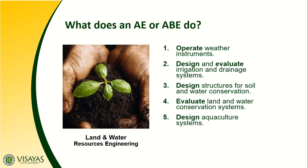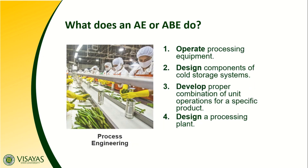All of these fundamentals for these specializations you will learn in the later part of our videos — this is just an introduction, just an overview of what agricultural and biosystems engineering is and what the fields of specialization are. For Process Engineering, the roles include: operate processing equipment; design components of cold storage systems; develop a proper combination of unit operations for a specific product; and design a processing plant.